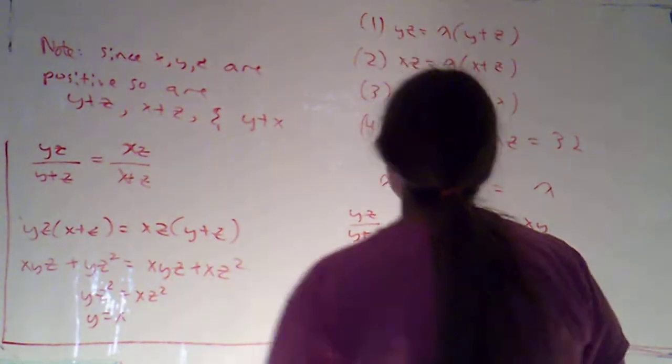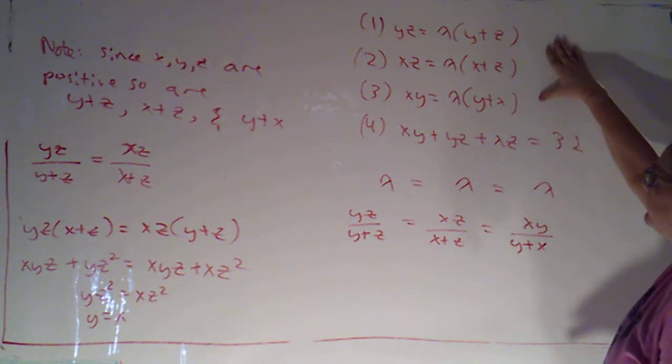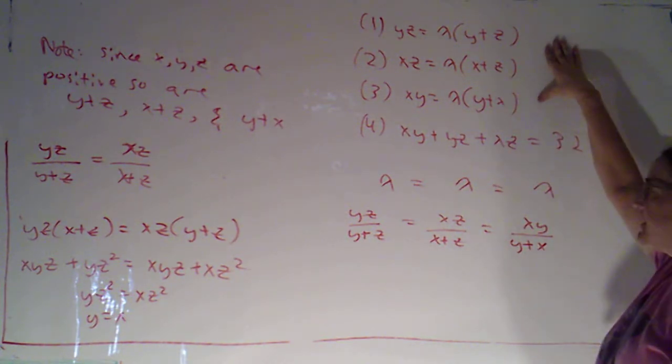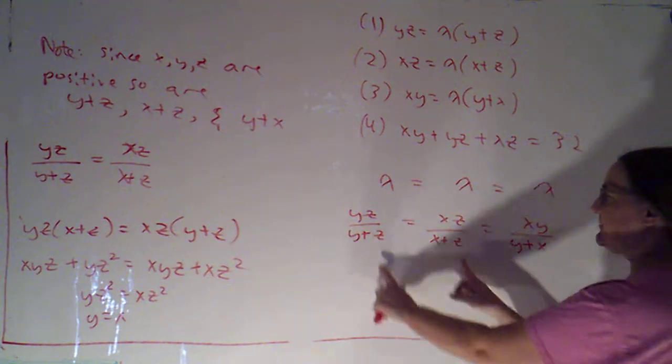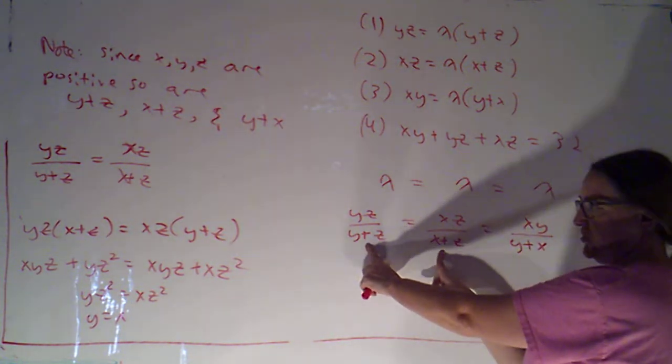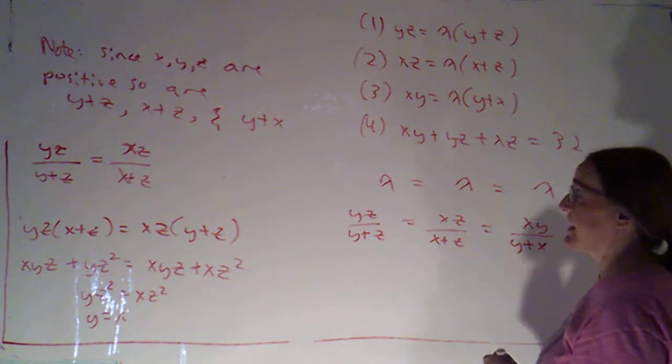Picking up where we left off! We had established that we didn't need cases in this problem, so we solved for lambda in each of the first three equations. We set those equal to each other. At the end of the last video, I paired off these first two characterizations of lambda, and from that I was able to get that y is equal to x.